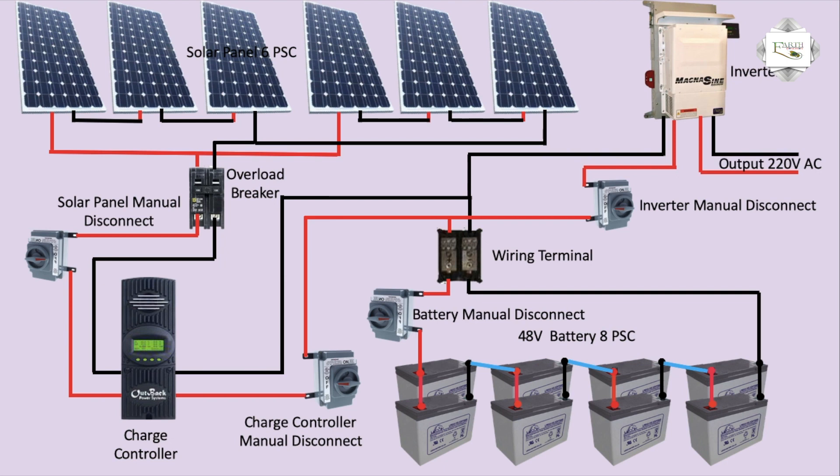Four manual disconnect switches are used: solar panel disconnect, charging controller disconnect, battery disconnect, and inverter disconnect. This completes the emergency break cold circuit for the complete solar panel system with manual control. Thank you.